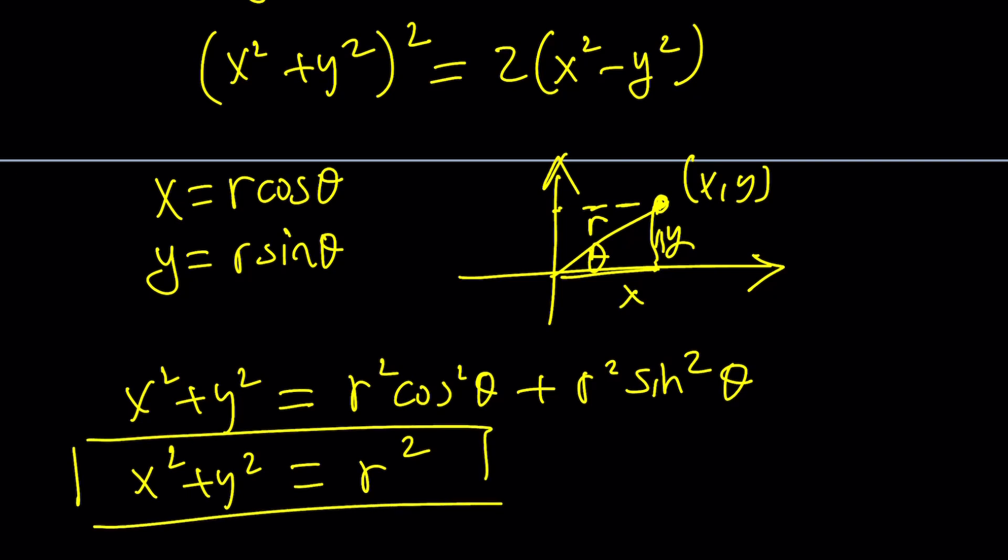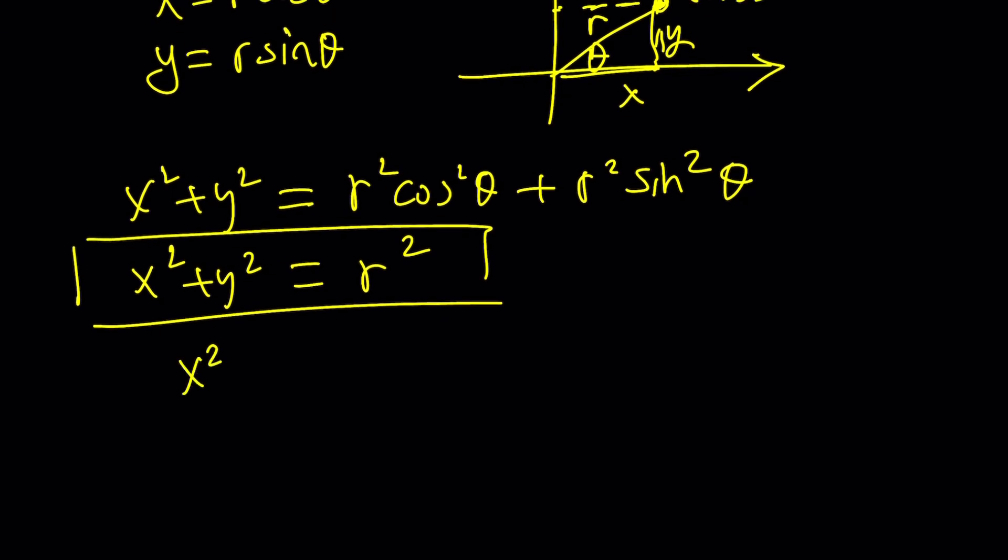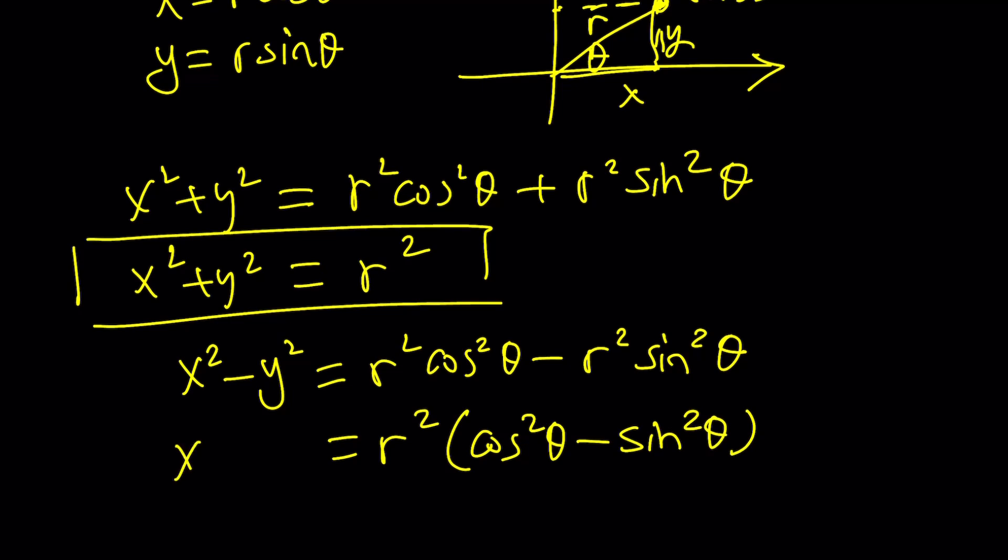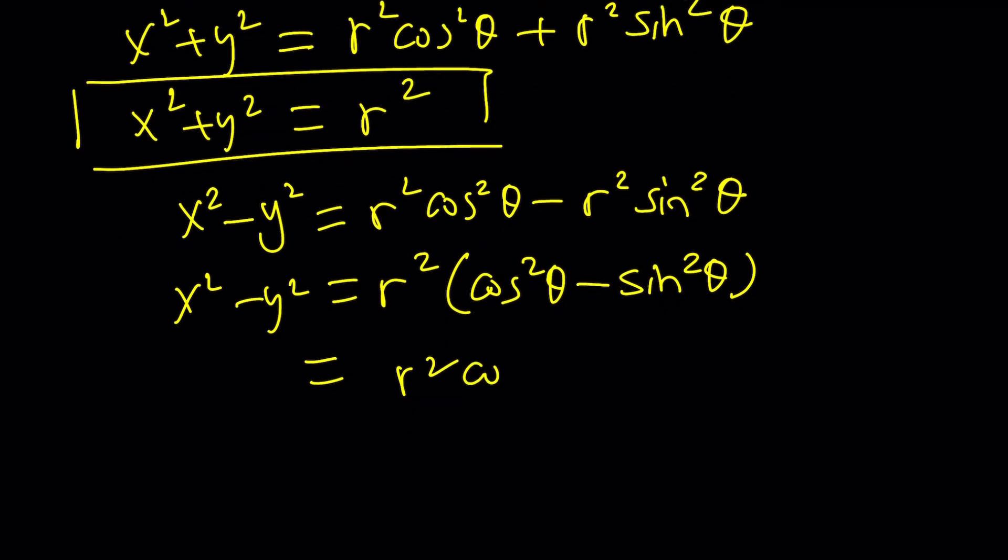What about x squared minus y squared? Good. That also has a nice answer. r squared cosine squared minus r squared sine squared. I can take out r squared. And guess what? A double angle formula emerges. Yes. And that's going to equal what? Cosine of 2 theta. Beautiful. So here's what we're going to do.